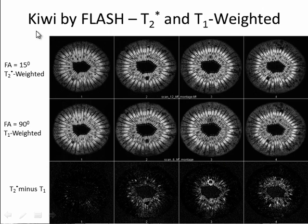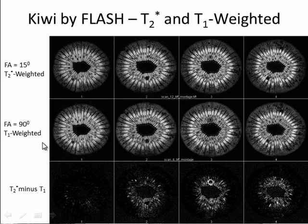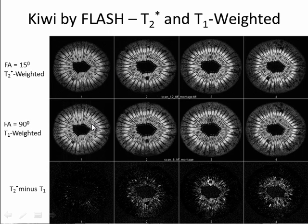I want to show some more images of our famous kiwi fruit. These were taken by a sequence called fast low angle shot, or FLASH, and these are T2 star and T1 weighted. The first row is T2 star weighted because the flip angle is very low. The next row has a flip angle of 90 degrees, so they are more T1 weighted. I subtracted this row of images from the first row to give these difference images — they are just processed subtraction images to show the difference in contrast between the T2 star weighted and T1 weighted images.